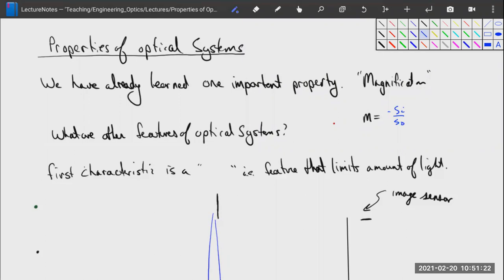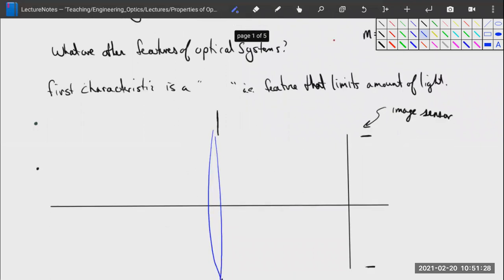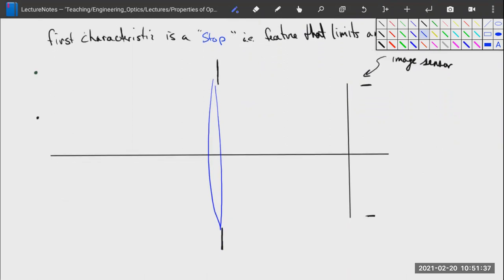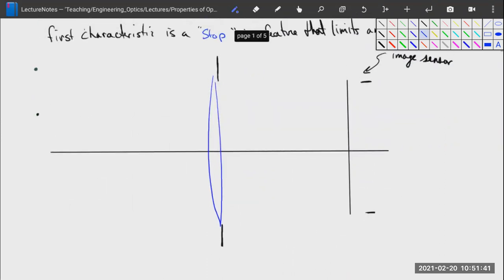The first thing I want to talk about is stops of an optical system. A stop is a feature that limits the amount of light that an optical system can capture. We've created an artificial stop here with this lens. Naturally, if light goes outside of the lens, it's not being collected.